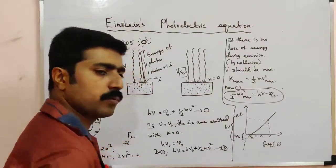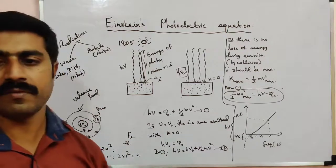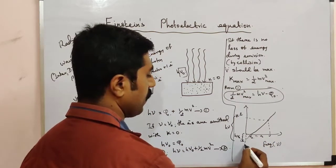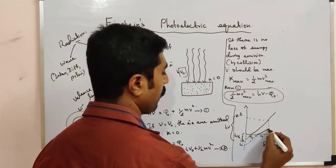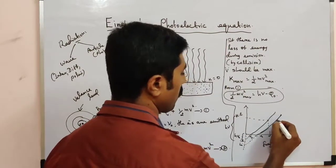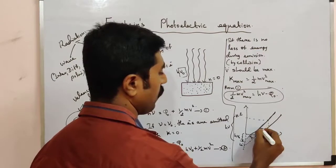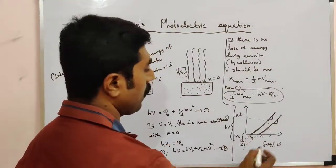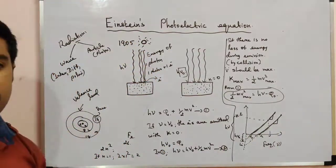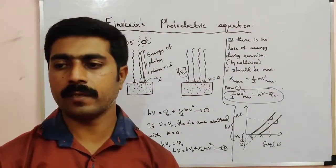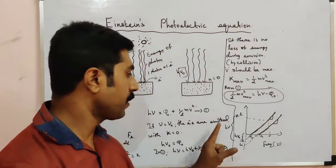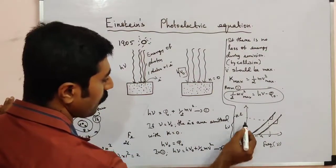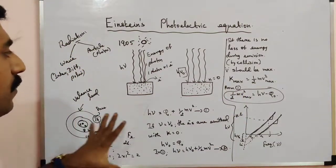He verified this by studying the same concept with more number of metals — different metals such as cesium and lithium. For all metals, the graph gives just a straight line. The slope of the straight line is constant and independent of the metals. The kinetic energy of the electrons is directly proportional to the frequency — if we increase frequency, kinetic energy also increases.